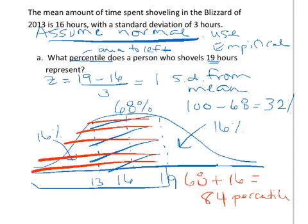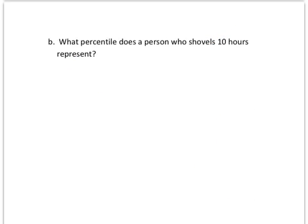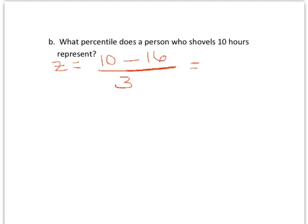You're going to use that same process for any one of these problems. It's a matter of drawing a normal curve, figuring out what the empirical rule tells you, and then filling in the other percentages and seeing what you need to add up. Now let's say what percentile does a person who shovels 10 hours represent? Same thing — let's find how many standard deviations away this is. It's below the mean, so it's going to come out negative: 10 minus 16 over 3 gives us negative 2. So we're two standard deviations to the left of the mean.